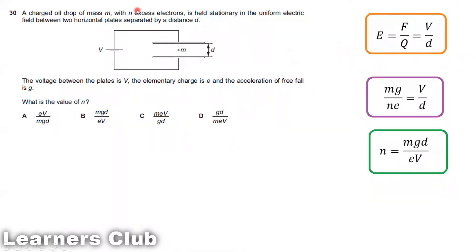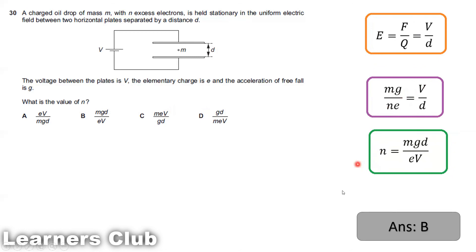Since the electric force equals the weight: the total charge is ne, so ne × (V/d) = mg. Making m the subject, we rearrange to get m = neV/(gd). Alternatively, solving for n gives n = mgd/(eV). The answer is option B.